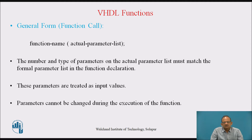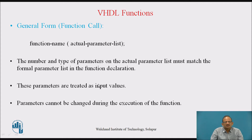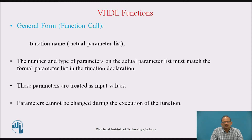Now, the general form for a function call: while calling a function, you provide the name of the function and then the actual parameter list which you are passing to that function. The number and type of parameters in the actual parameter list must match the formal parameter list in the function declaration. These parameters are treated as input values — they are all inputs to a function. Parameters cannot be changed during the execution of the function; whatever values you are passing cannot be changed during execution.